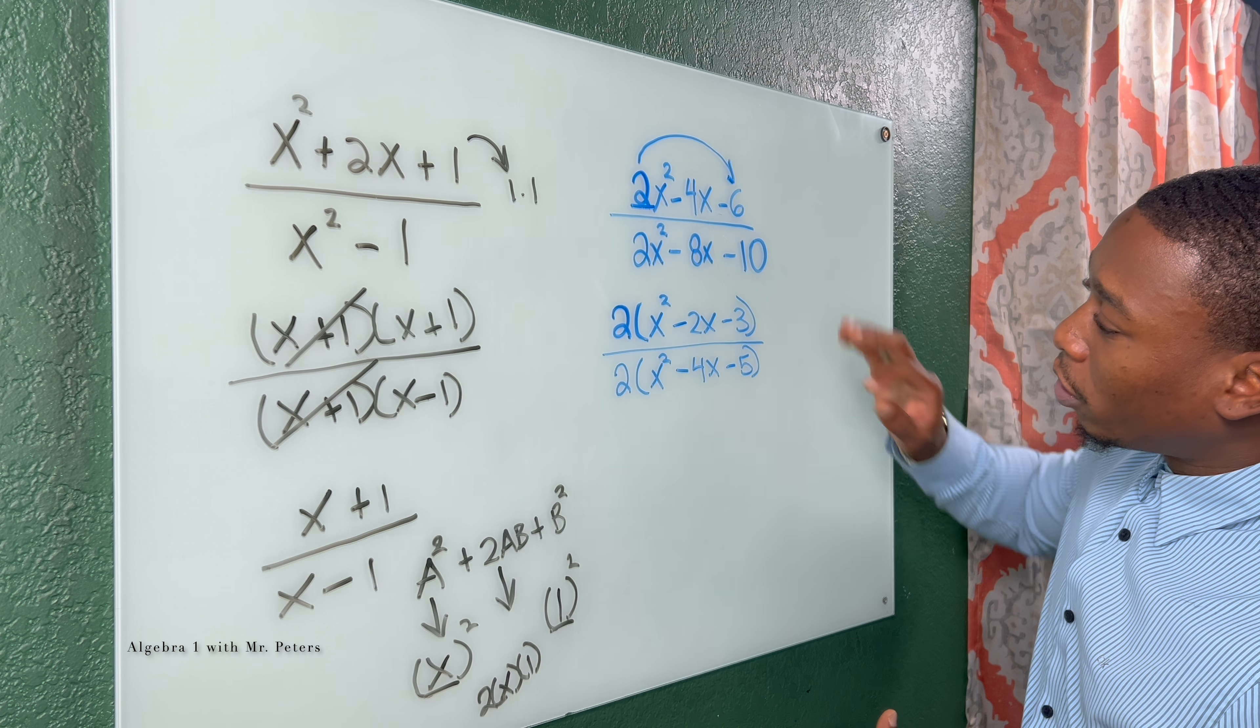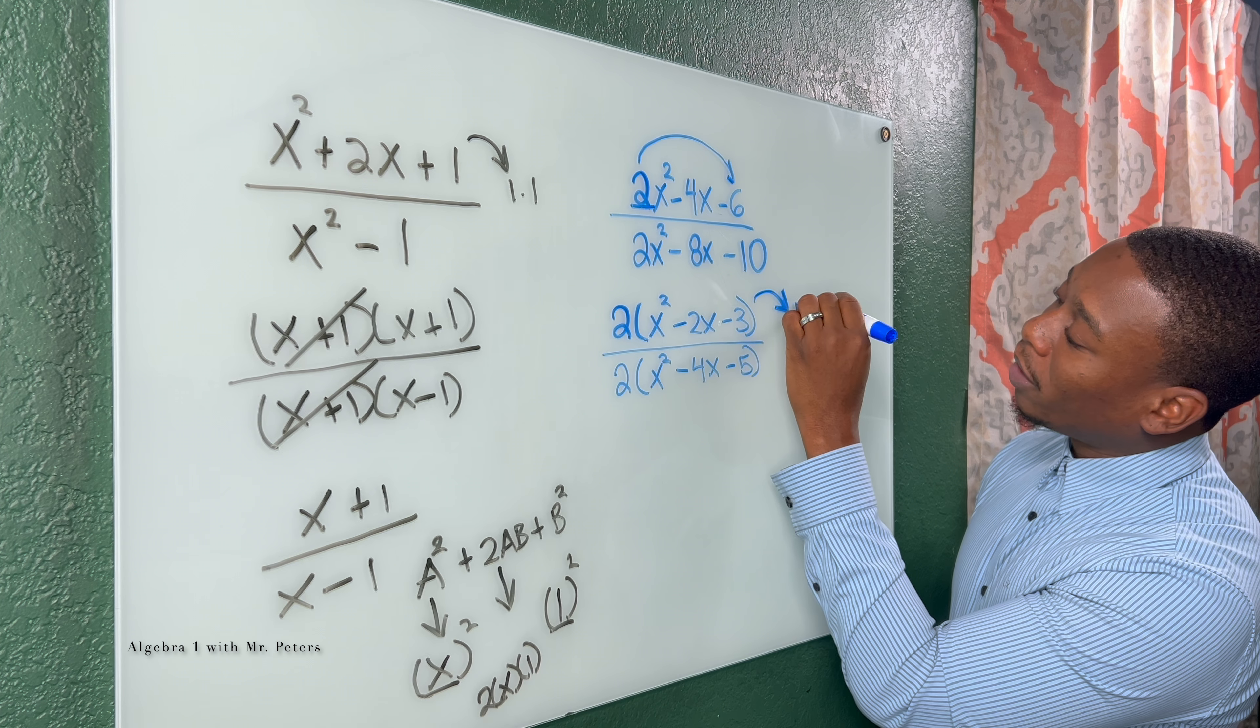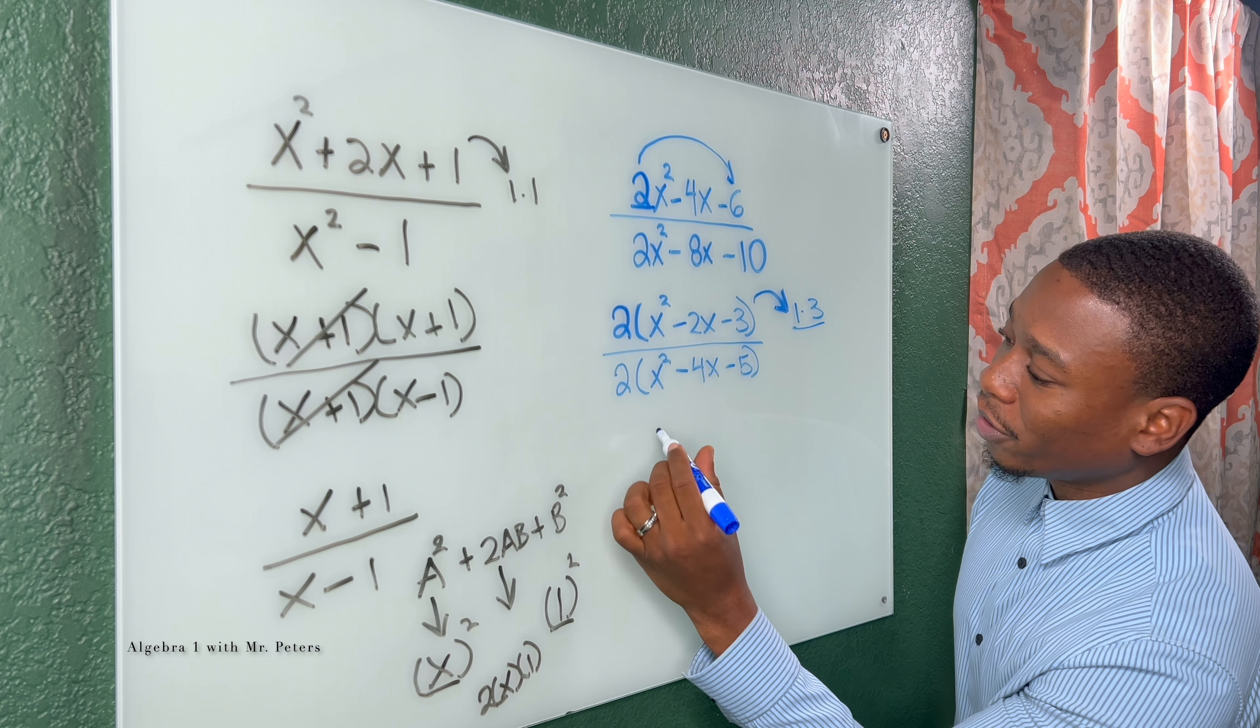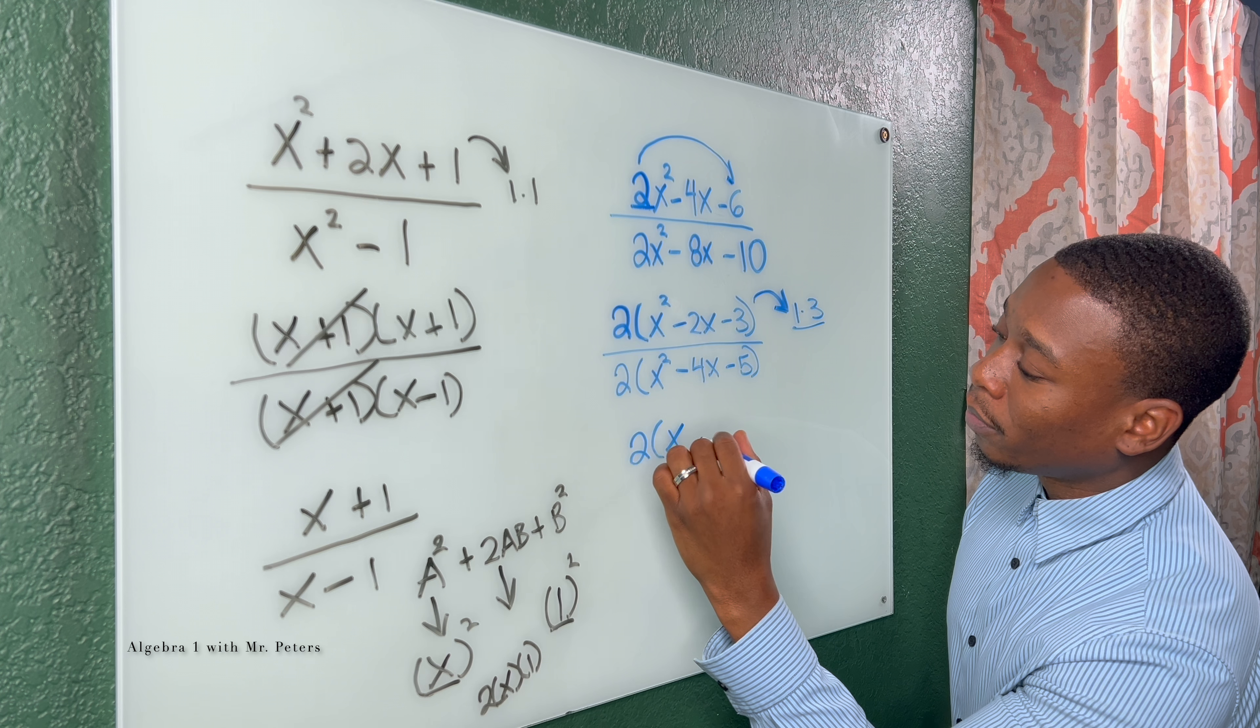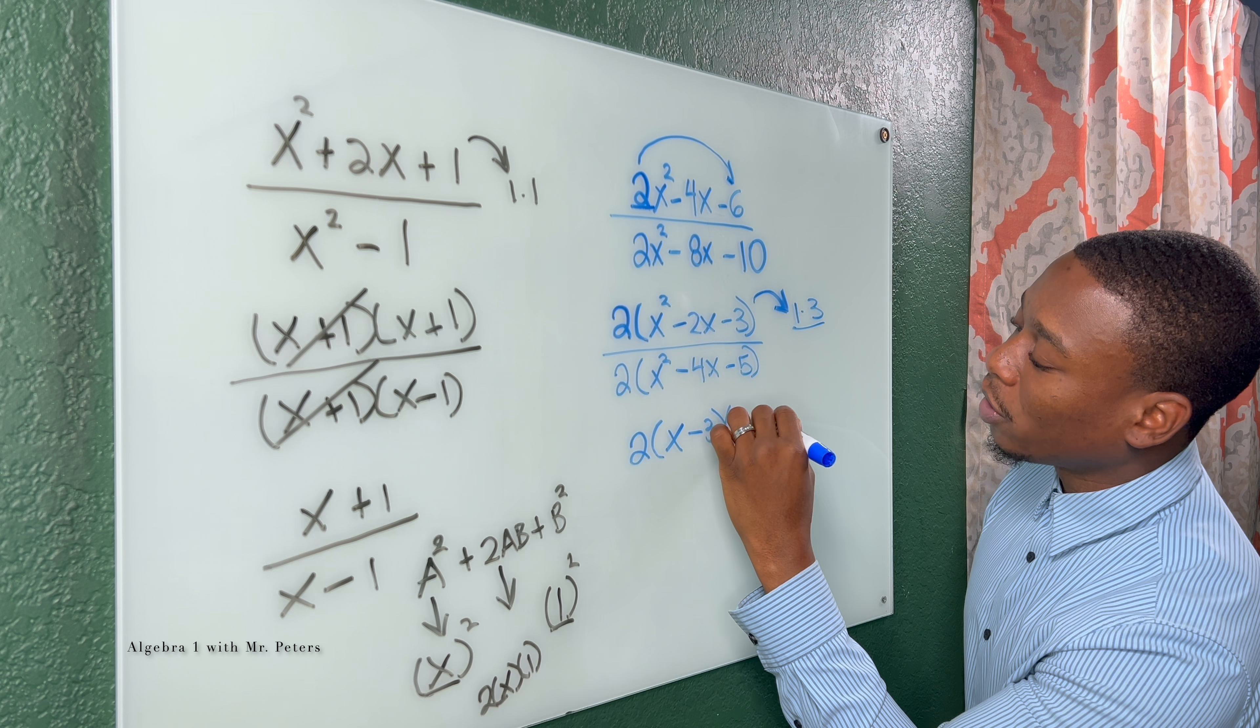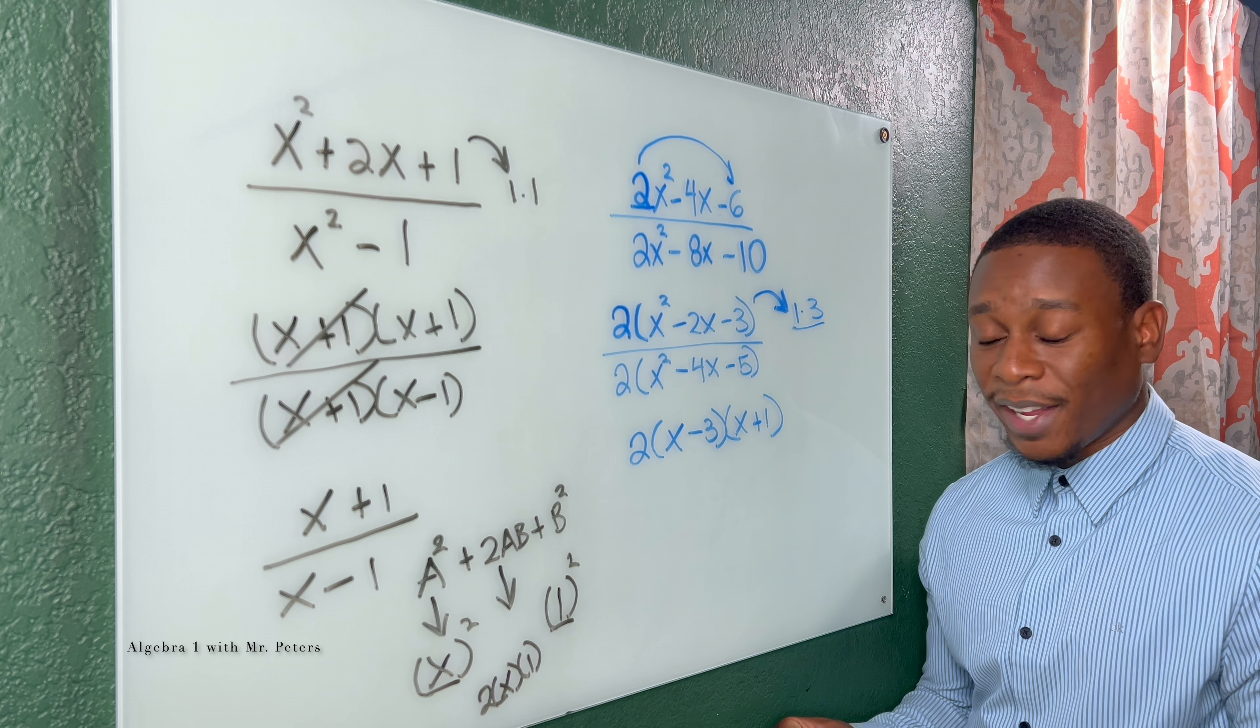So now we're focusing on these factors. And we know it's going to multiply to give us 3 for the top, and these are the only two factors. So when I go in, the top is going to be 2 times x minus 3 times x plus 1.